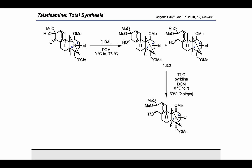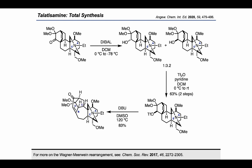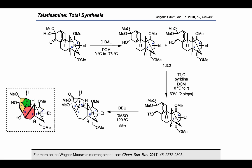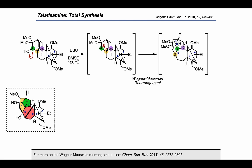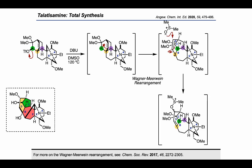They were now ready for another key step: the skeletal rearrangement. Using DBU and DMSO at 120 degrees, they could arrive smoothly at a product containing the BCD ring system well-positioned to reach the final target. Taking a closer look, the triflate group can leave to generate a secondary carbocation, which undergoes a Wagner-Meerwein rearrangement to form a tertiary carbocation. That tertiary carbocation can be attacked at the allylic position by DMSO to generate an adduct, which can undergo a Swern-type oxidation to arrive at the enone product.